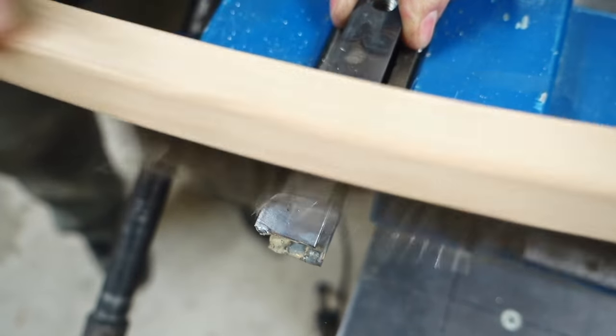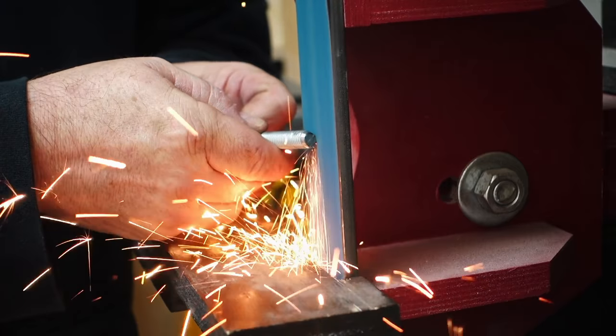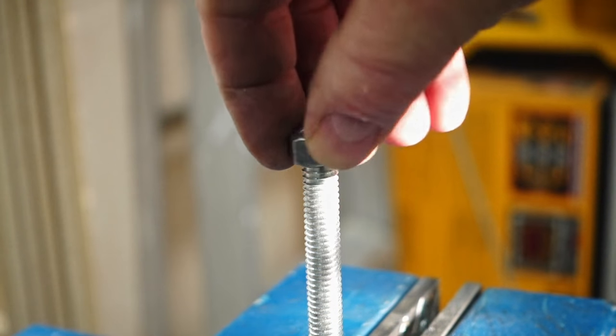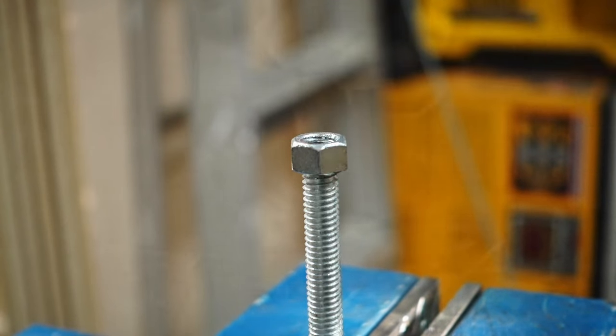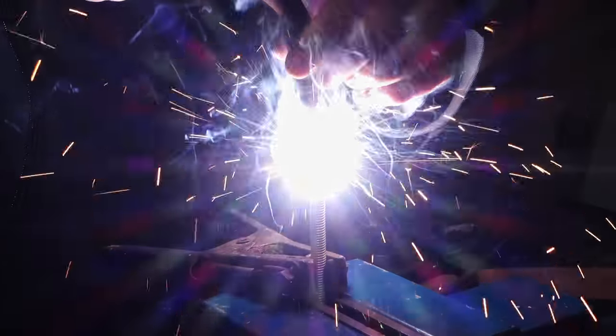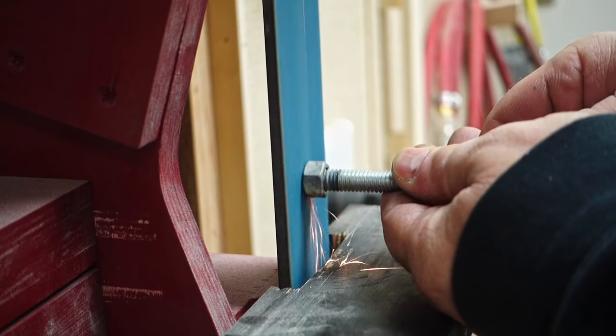For the lead screw on this, I wanted to use half inch, but I thought it would be too big for this. So I went to three-eighths inch threaded rod and those thread into two three-eighths inch nuts that are welded into the plates on the moving jaw.